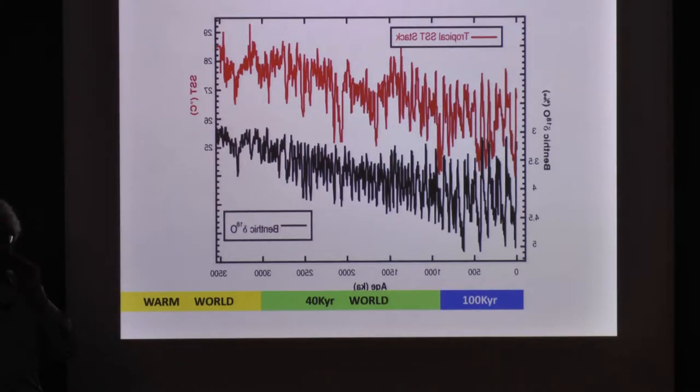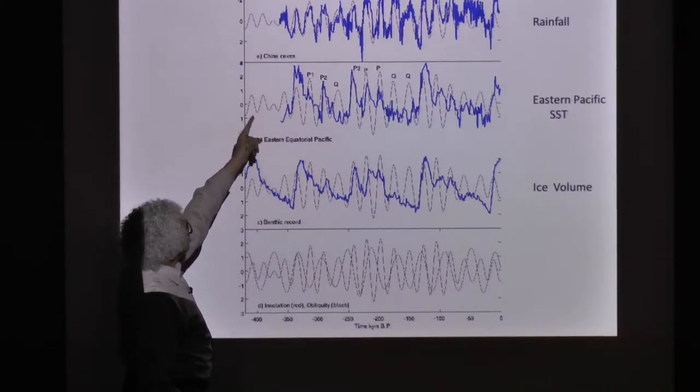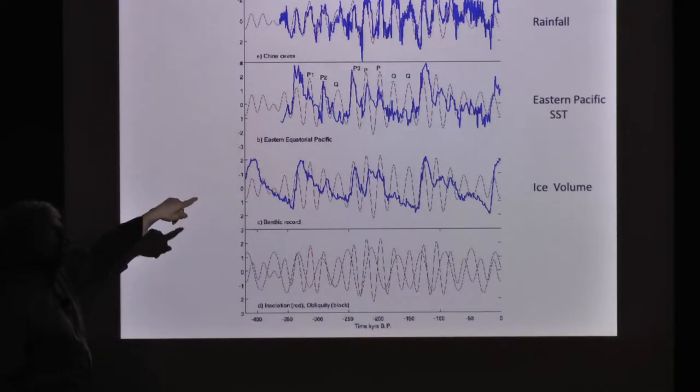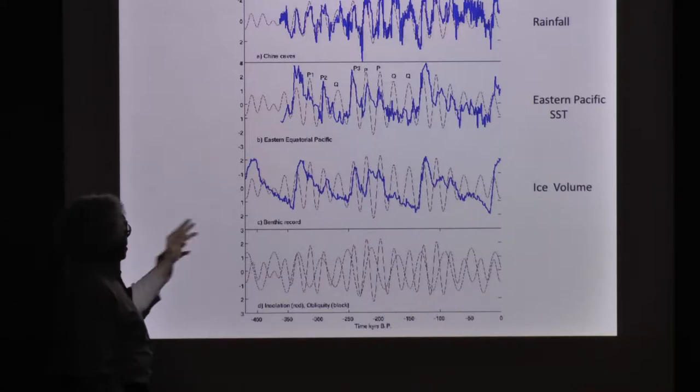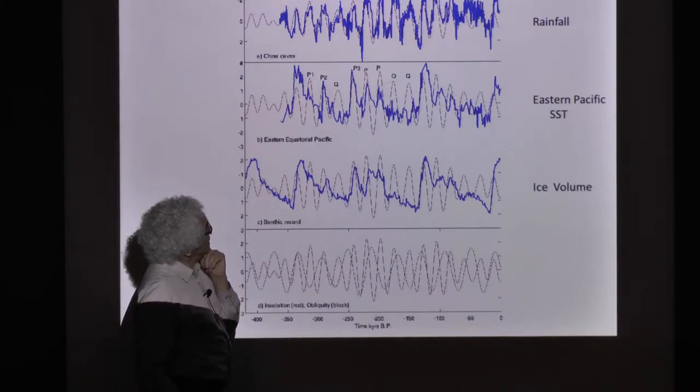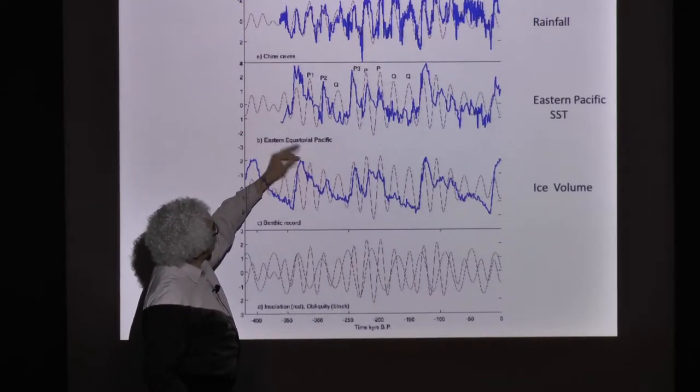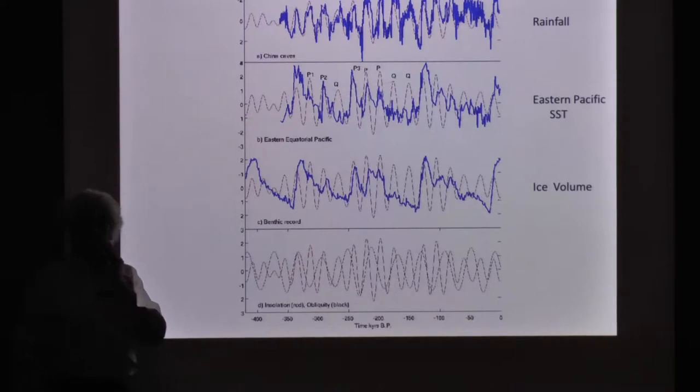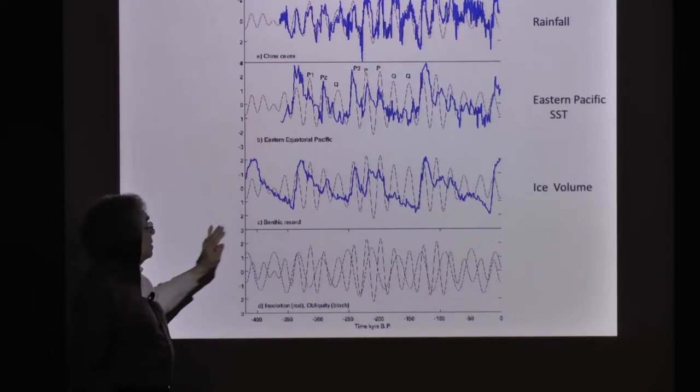These are records. The top is from China caves—it's mostly rainfall. Superimposed, I've put the precession signal, and it looks as if whatever goes on in China is relatively simple. Precession is dictating what happens. This is the record I just showed—the ice volume—you see the sawtooth seems to have very little to do with precession. But strangely, this is sea surface temperature in eastern Pacific, looks amazingly much like this, even though the forcing it experiences is like that. Sea surface temperature in the Pacific is quite astonishing in that it looks like the glaciers.